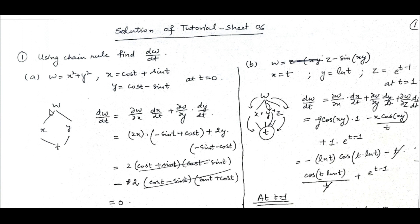Here, w is a function of two variables x and y, and x and y are depending on the variable t. We have to find out the derivative of w with respect to t using the chain rule. The chain rule says: first find the derivative of w with respect to x, then take the derivative of x with respect to t, plus the derivative of w with respect to y and then the derivative of y with respect to t. Whenever we have a function of two independent variables, we denote the derivative with the partial, and whenever the functions are functions of a single variable, we denote the derivative with the simple dx/dt.